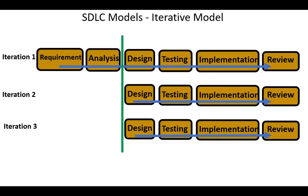If there are any errors found, the process starts again from the requirement gathering. The main difference between the incremental model and the iterative model is that an iterative process makes progress through continuous refinement, while an incremental process makes progress through small increments.